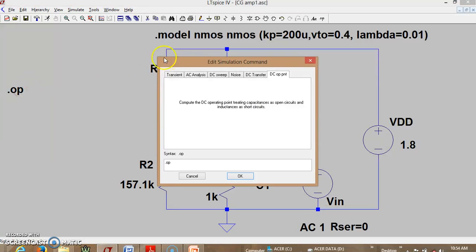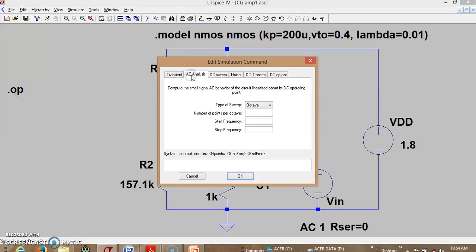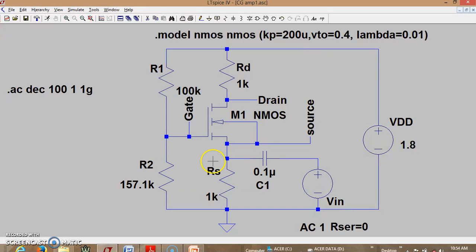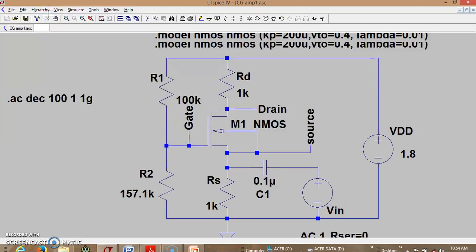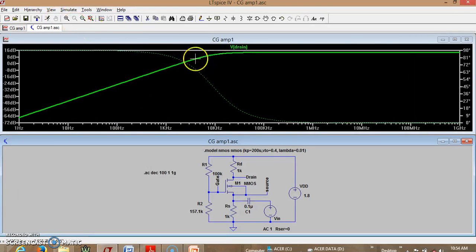So for that let us change this to AC sweep and we shall edit the parameters. So these are the parameters for your AC sweep. Now that has been modified so let me run this and try to see. This is the frequency response of this circuit now.